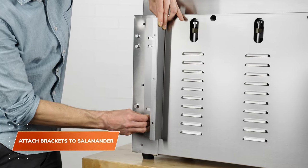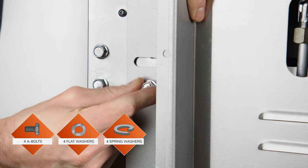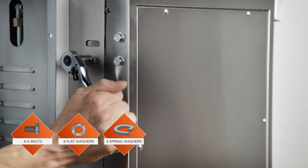Now, attach the two L-shaped brackets to the backside of the Salamander using the A-bolts, flat washers, and spring washers you removed from the back of the Salamander.